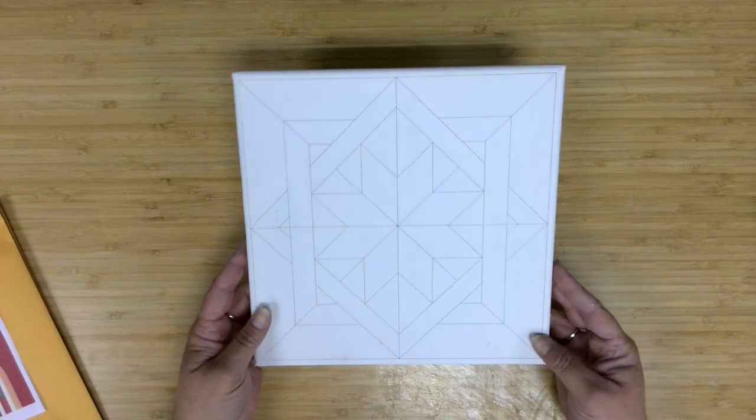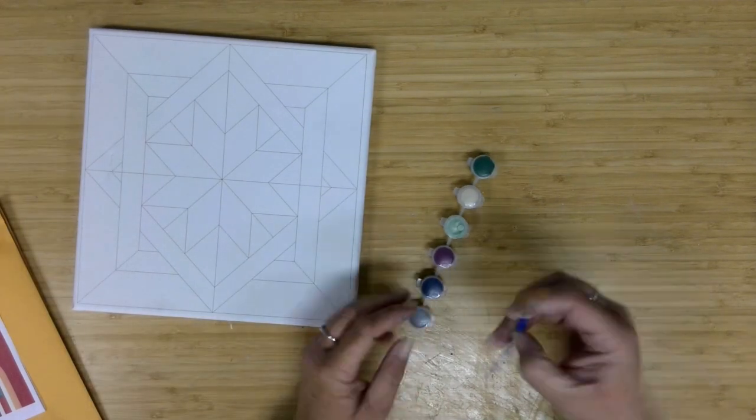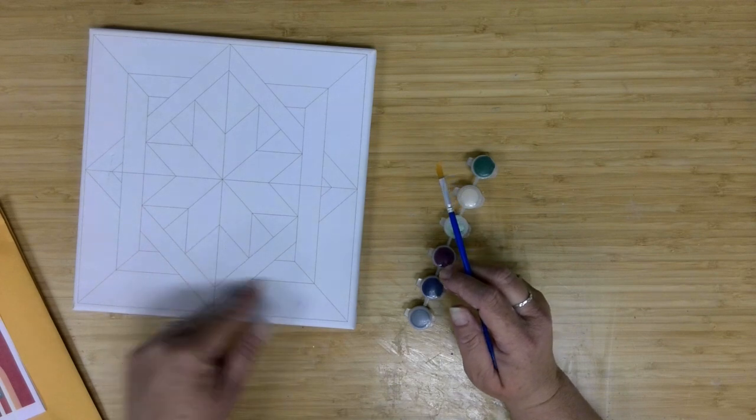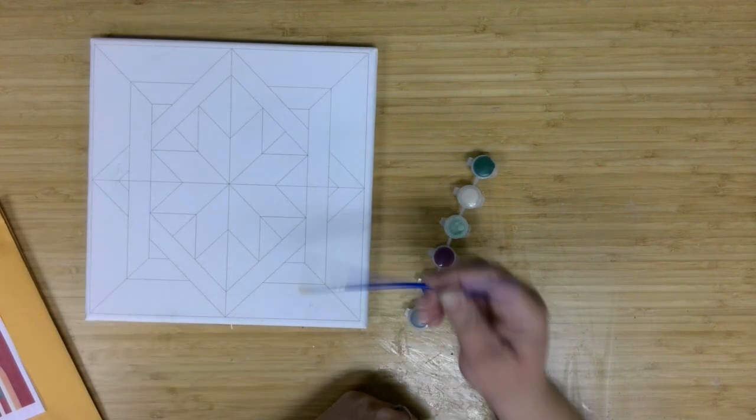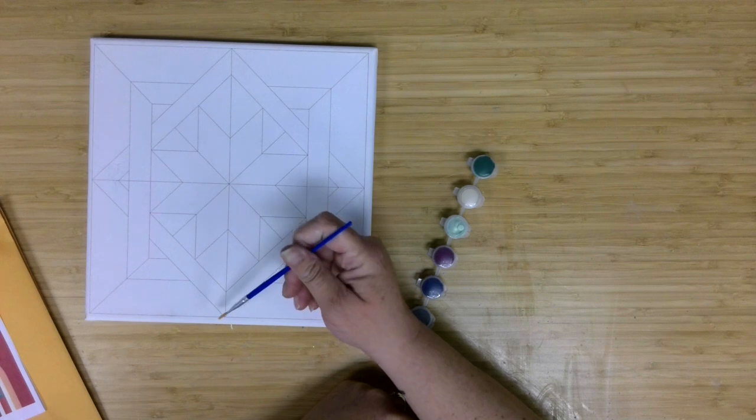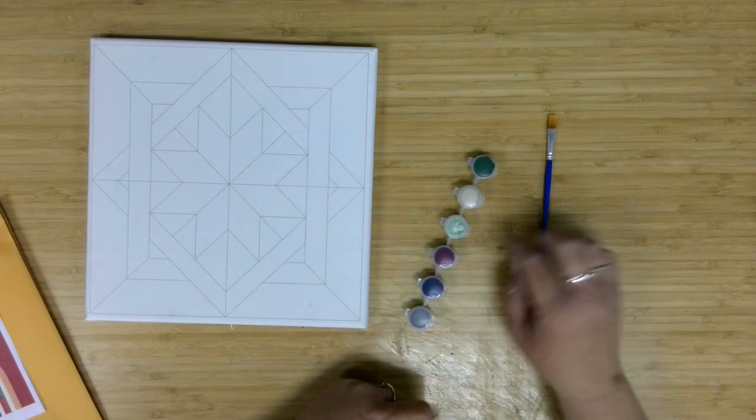So in addition to our canvas with the design already on it, you are getting a flat brush. Since this particular design has mostly angles, this brush should hopefully be pretty easy to follow those lines. You'll have these little corners that might give you a little bit of trouble, but nothing too bad.